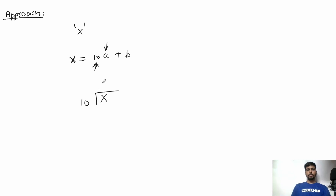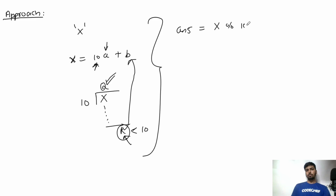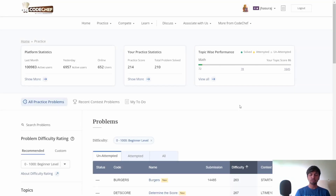We divide X by 10 to get a quotient and a remainder. We can pay exactly that many notes of 10 rupees, and the remainder — which is less than 10 — must be paid in coins. So the answer is simply X modulus 10, which is the remainder after dividing by 10. In other words, the last digit of X is the answer. For example, if X ends in 7, the answer is 7.